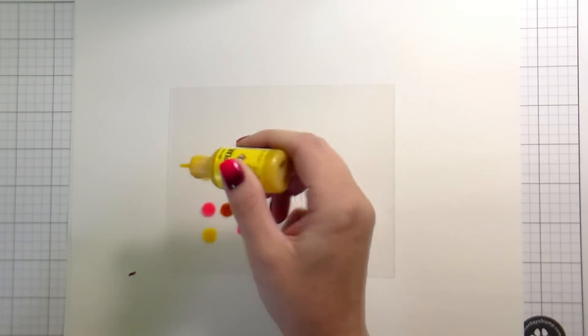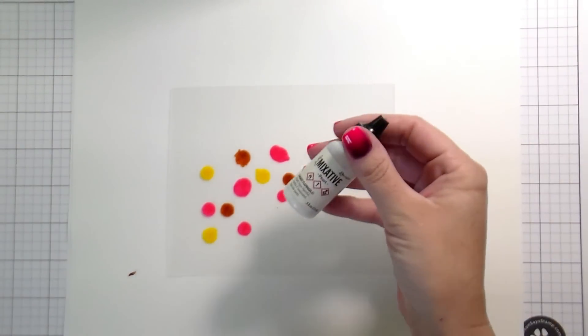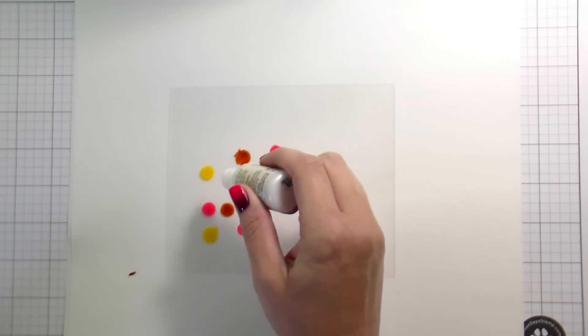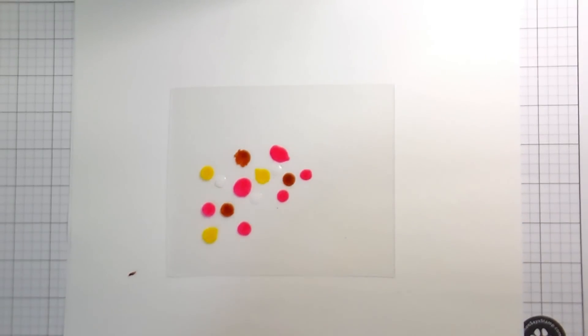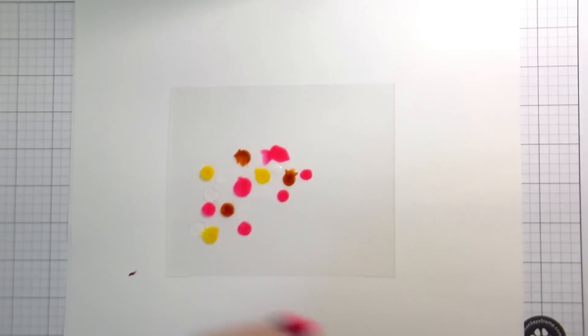So I am using acetate from Hero Arts. It worked really well for me. You'll probably have to play around with whatever acetate that you have on hand to see what works for you. But I'm also using instead of just regular alcohol inks, I'm using alcohol pearls. They just have a little bit of shimmer in them.